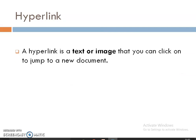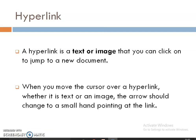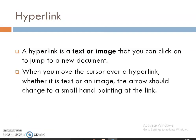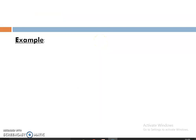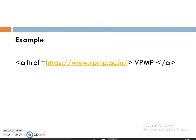A hyperlink is a text or image that you can click to jump to a new document. Whenever your cursor moves on a particular hyperlink, the arrow changes to a small hand pointing at the link, and clicking on that link opens a new page or new place in the current page. For example, creating a link using an anchor tag with href referencing the VPMP website — the text 'VPMP' used to refer to this link is known as hypertext.